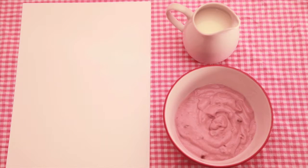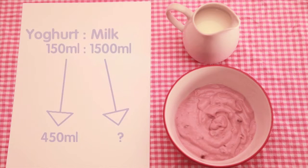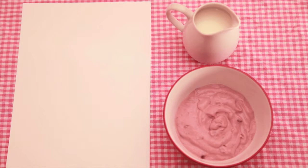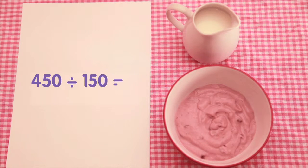Now write the ratio. We don't know how much milk she needs yet, but we do know how much yoghurt she has. We need to divide 450 millilitres by 150 millilitres.